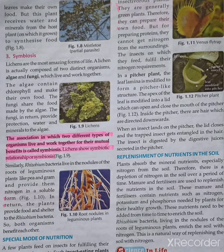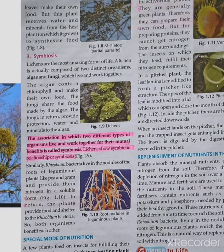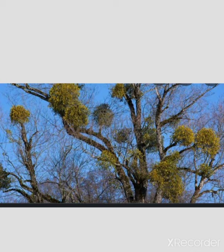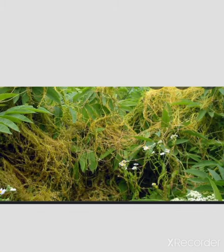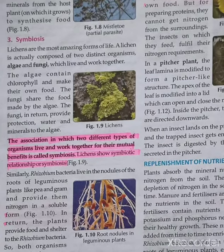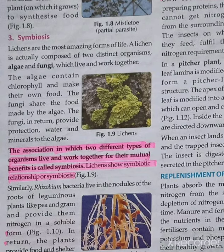Now the third point is symbiosis. Lichens are the most amazing forms of life. A lichen is actually composed of two distinct organisms, which are algae and fungi, which live and work together. The algae contain chlorophyll and make their own food, and the fungi share the food made by the algae.